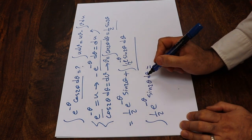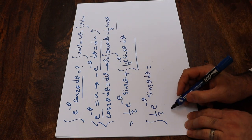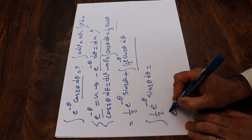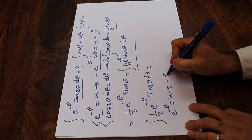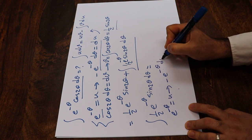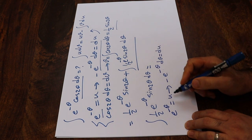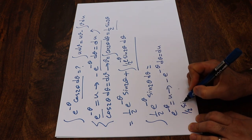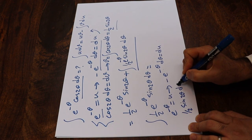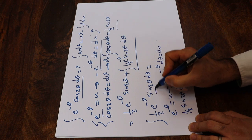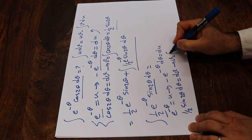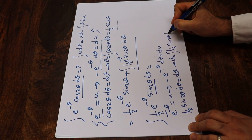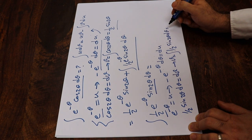Applying the formula again: if I define e to the power of minus theta as u, then minus e to the power of minus theta d theta equals du. And if I define 1 divided by 2 sine 2 theta d theta as dv — that is basically this term — therefore v equals the integral of 1 divided by 2 sine 2 theta d theta, which equals minus 1 divided by 4 cosine 2 theta.